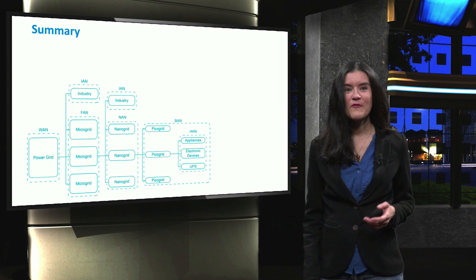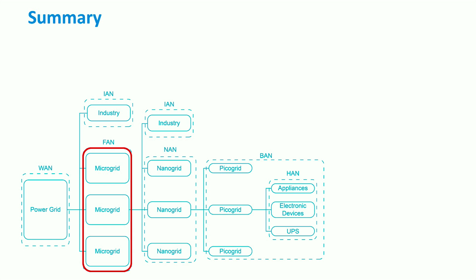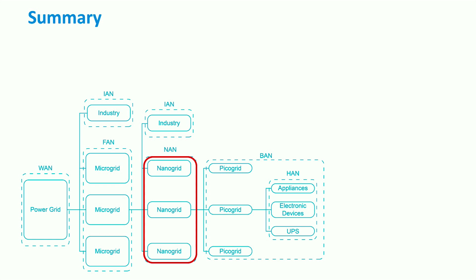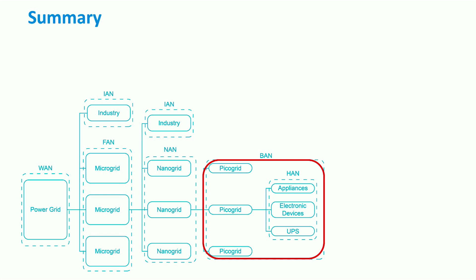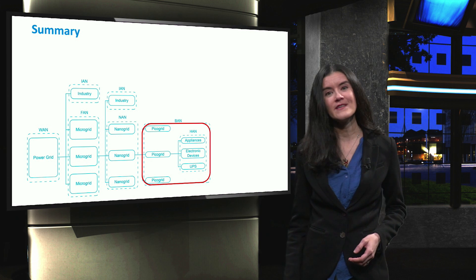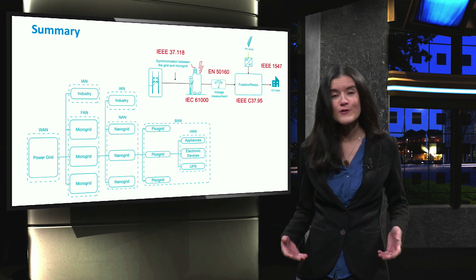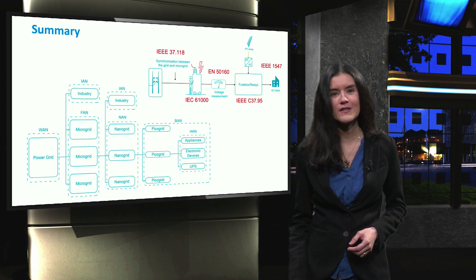Let's sum up what we have seen today. We briefly described the different area networks and their application in microgrid context. In a nutshell, the wide area network communicates with the power grid. The field area network allows information exchange between microgrids. The near-me area network is suitable for nanogrids and the industrial area network for industries. At the household level, the communication infrastructure consists of the building and home area networks. We also mentioned that different protocols are used for communication and data exchange. Finally, international standards can be applied to microgrids in order to monitor and control the correct functioning of all components, especially at a communication layer.